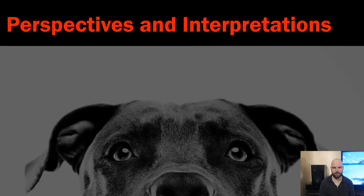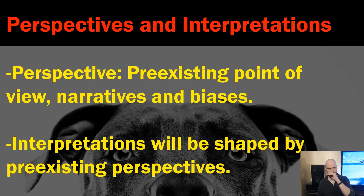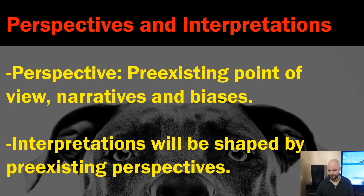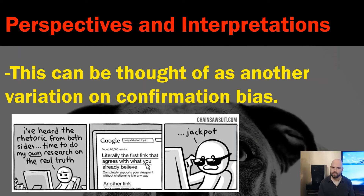Next, two vocab terms — think of them as separate and distinct: perspectives and interpretations. For the flashcard, think of perspective as a pre-existing point of view — pre-existing narratives and stories you tell yourself to make the world make sense, any biases you have. Interpretation is the way you actually process information: you see a fact, you're convinced it's real, and the interpretation is what you do with it. Interpretation is always shaped by pre-existing bias — this should sound familiar from discussions about confirmation bias.